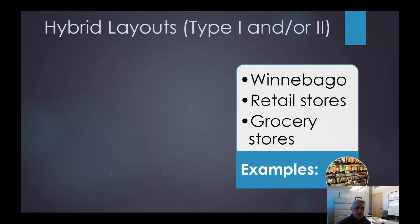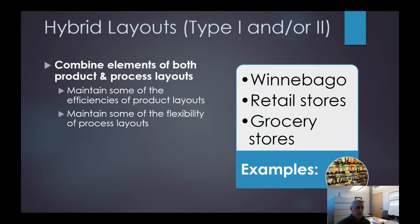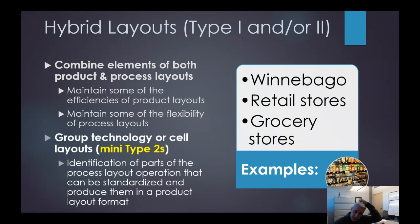A hybrid layout combines elements of both product and process layouts, where we can maintain some of the efficiencies of product layouts but need a little flexibility — that's where the process layout comes in. These can involve what we call group technology, or GT cell layouts, which we'll cover in another lecture. Parts of the process can be standardized to produce an intermediary product before the final product. Examples include Winnebago campers, retail stores, and grocery stores.